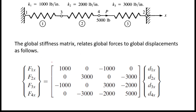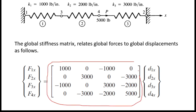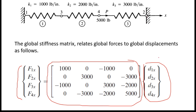This is the global stiffness matrix we obtained in the previous video. These are the global forces — not local forces. Capital F1X means force on node 1, F2X means force on node 2, F3X and F4X denote forces on nodes 3 and 4. These are displacements: D1X means displacement of node 1, D2X means displacement of node 2, and D3X, D4X mean displacements of nodes 3 and 4.